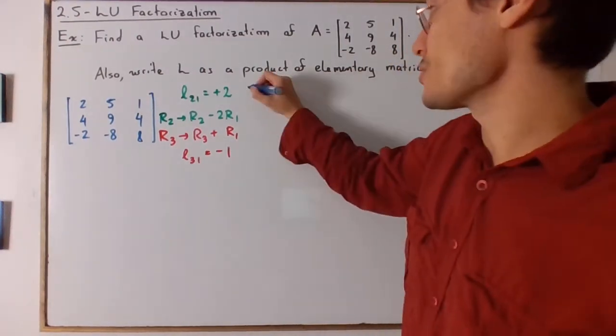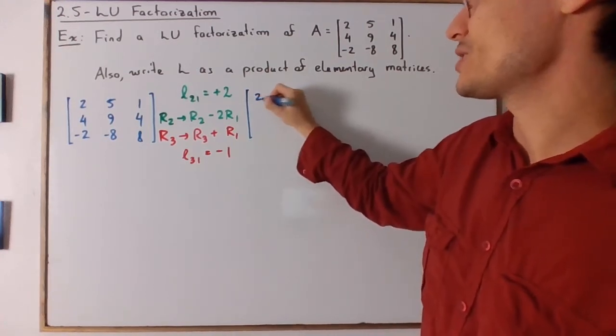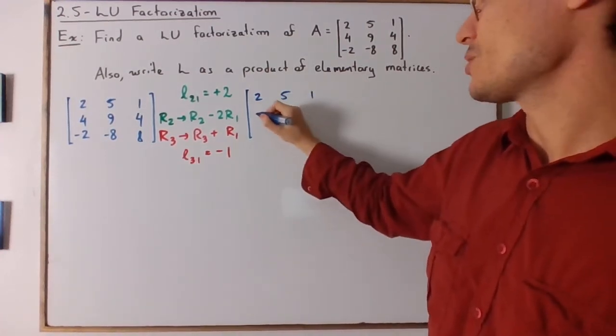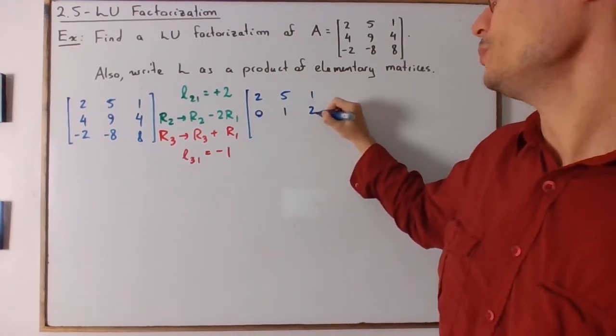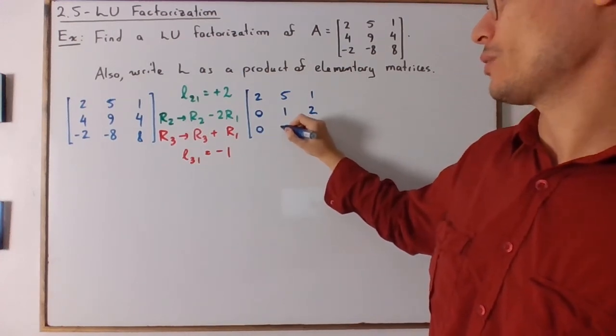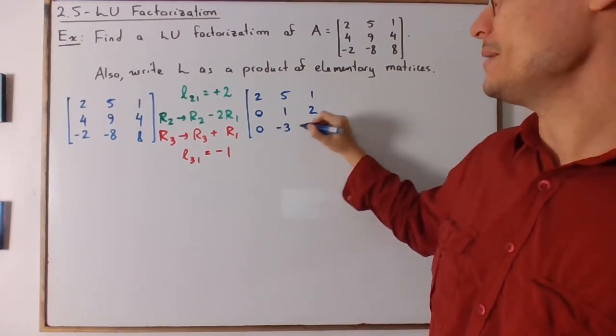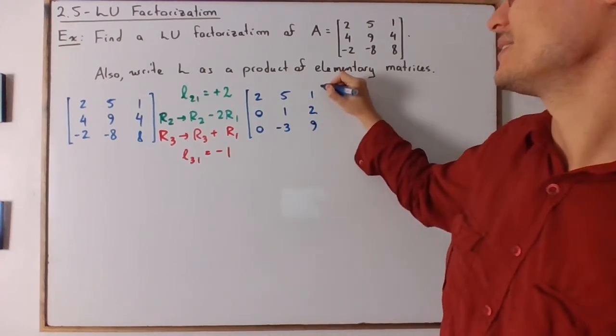Now, of course, you have to actively perform the row reduction because that's how you find the matrix U. So we have here 0, 1, 2. And then we have here 0, and we're going to have negative 3, and 8 plus 1, I believe, yeah, 9. There we go.